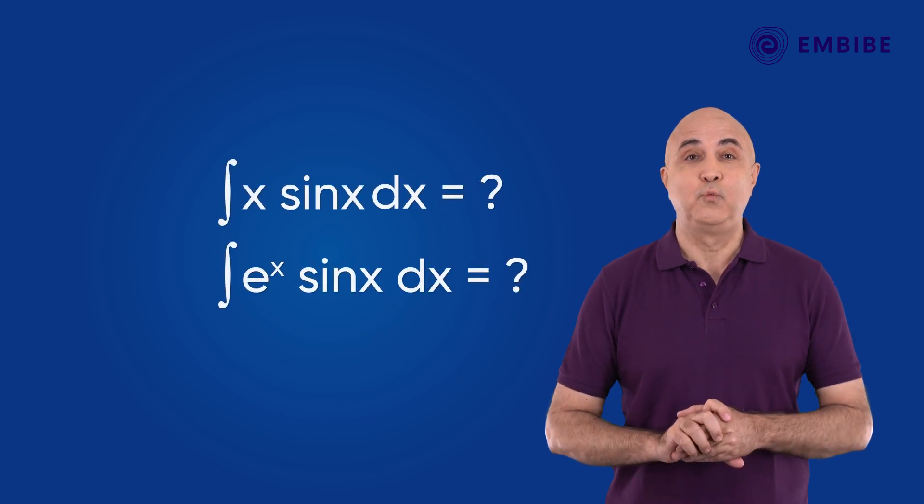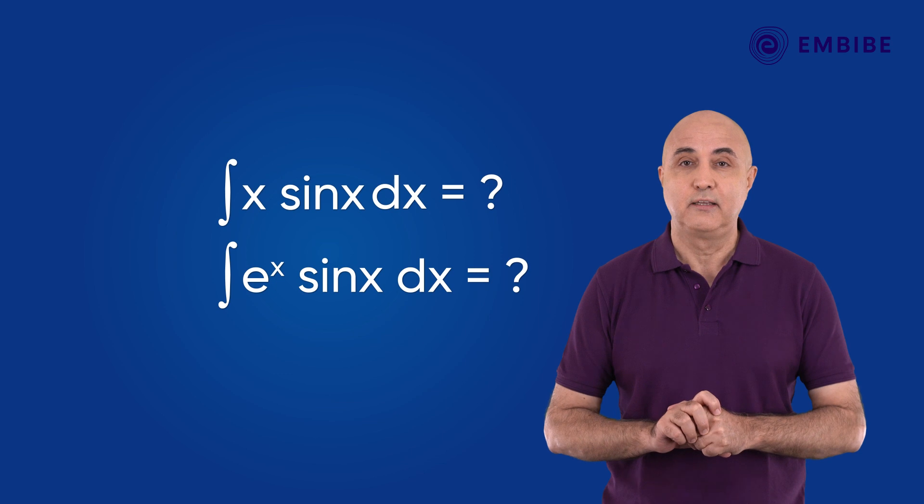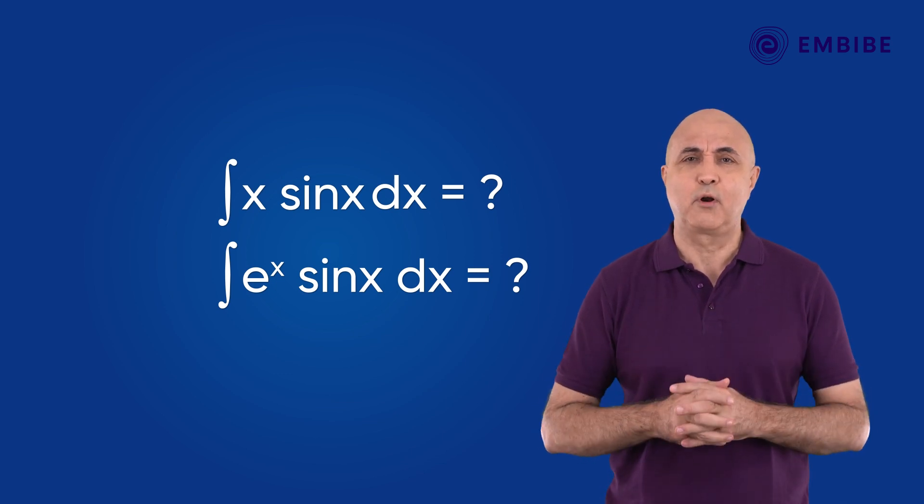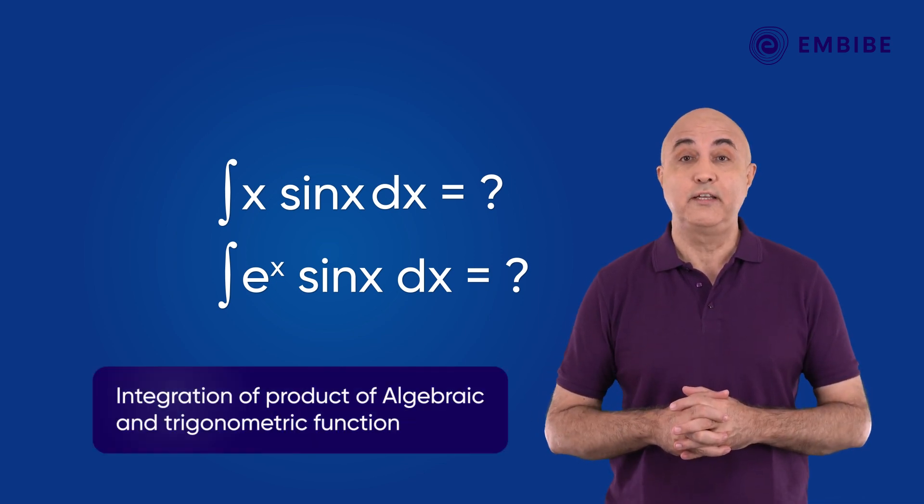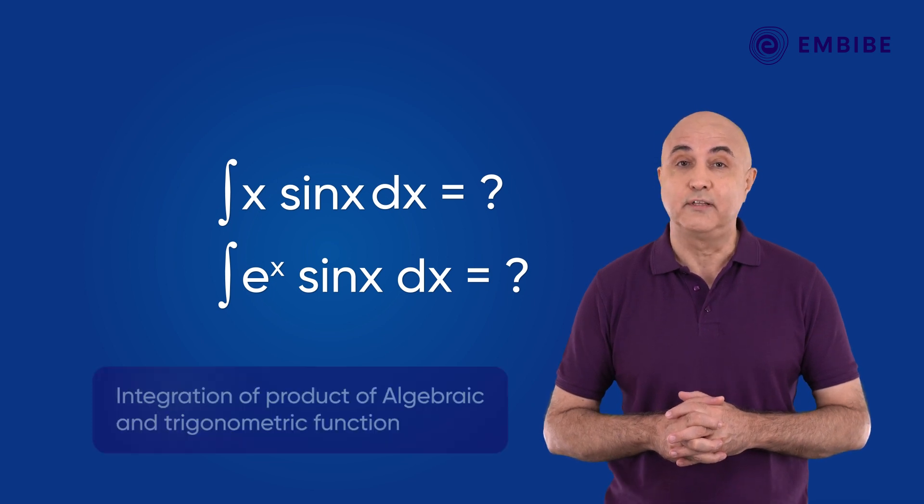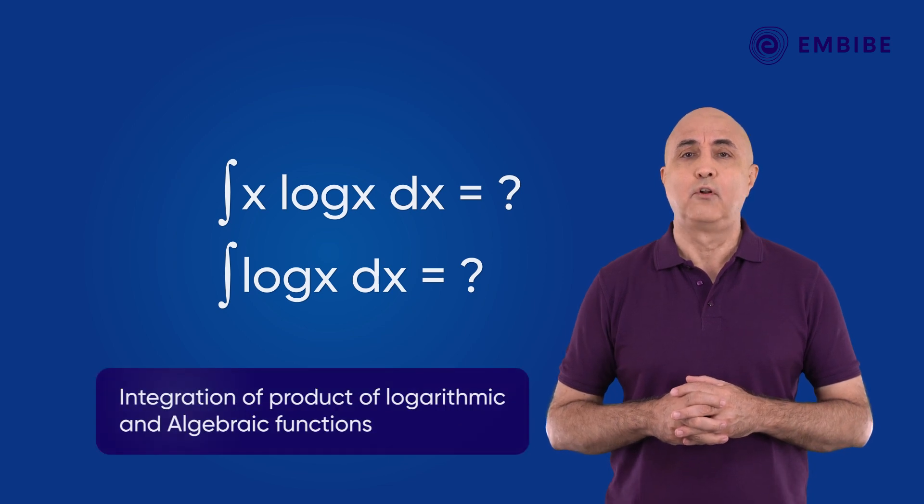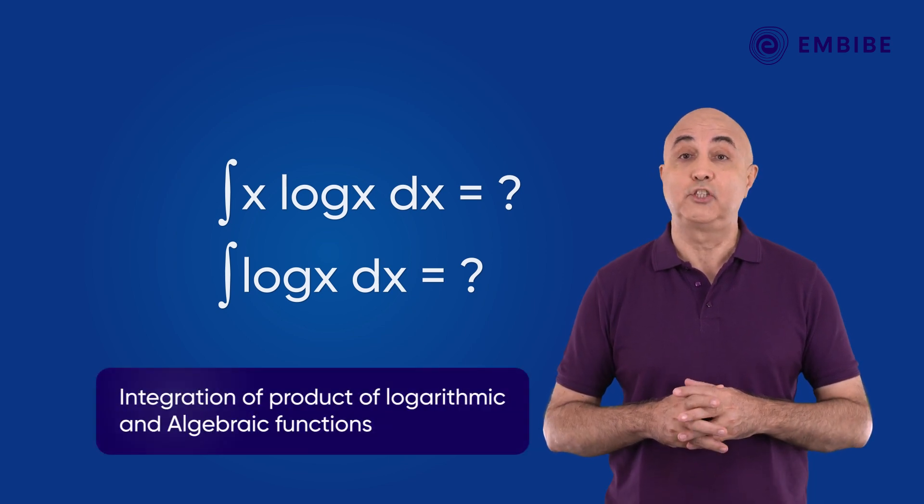What method of integration will be used if different genres of functions are multiplied? There are enough ways to solve the problem. How would you integrate if a product of algebraic and trigonometric function is given?